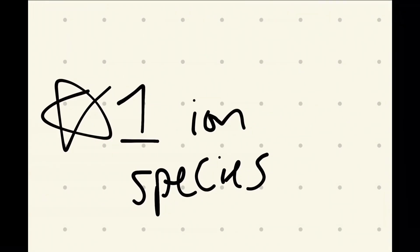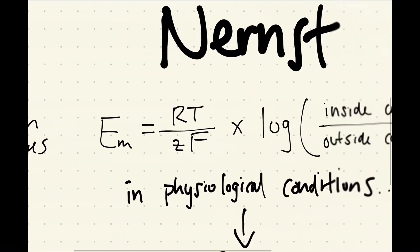So to get started, the Nernst Equation is for one ion species. In a normal cell in your body, it's going to have a lot of different ions—sodium ions, potassium ions, chlorine ions. We're only looking at one ion species with the Nernst Equation.